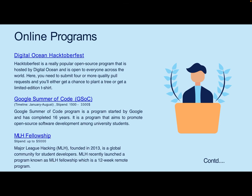Now, some online programs: DigitalOcean Hacktoberfest is a very popular open source program hosted by DigitalOcean. You need to submit 4 or more quality pull requests and you either get a chance to plant a tree or get a limited edition t-shirt — generally people do it for the t-shirt. Google Summer of Code (GSoC) is the most famous one, though difficult to get selected. The timeline is between January and August and the stipend ranges from $1,500 to $3,300. It's celebrating 16 years and is targeting open source software development for university students, though they are now opening it to professionals also.